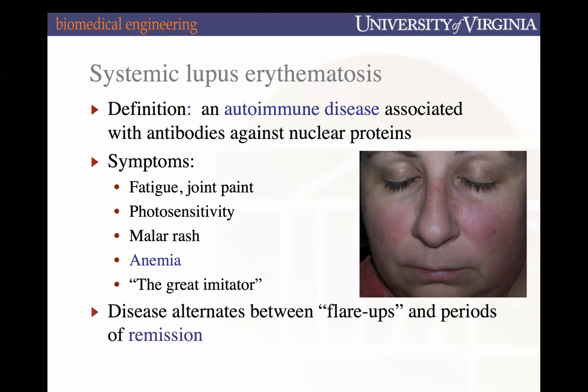Widespread organ failure isn't always the case, but lupus nephritis is one manifestation — over time there's tissue damage in the kidney that can be fatal. This disease alternates between flare-ups and periods of remission. Remission is when symptoms are no longer present, which can make it hard to adequately treat.